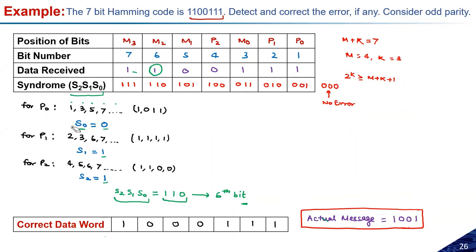The student confirms the doubt is clear. The instructor also confirms: the number of syndrome bits equals the number of parity bits required for the given message length. The number of syndrome bits will be the same as the number of parity bits.